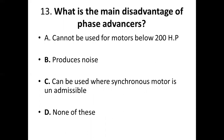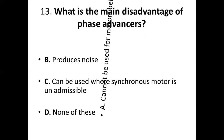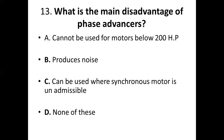Question 13: What is the main disadvantage of a phase advancer? Option A: cannot be used for motors below 200 HP. Option B: produces noise. Option C: cannot be used where synchronous motor is inadmissible. Option D: none of these. Answer: Option A — cannot be used for motors below 200 HP.